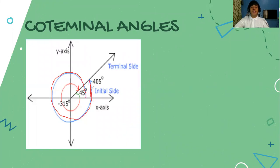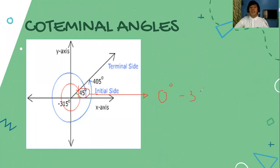The exceeding value will be a 45-degree angle. This 45-degree angle is what we call the positive coterminal angle between 0 degrees and 360 degrees. So the first coterminal angle of 405 degrees is the 45-degree angle, which should be between 0 and 360 degrees.